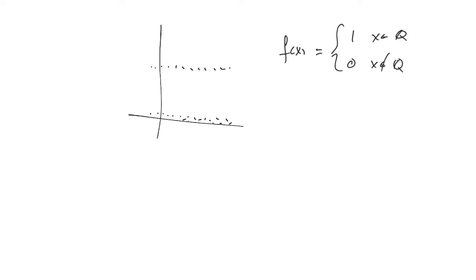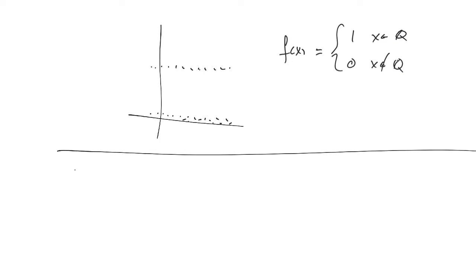That was the first of the two wild examples. And in my opinion, considerably wilder is the second example — this is called Thomae's function. I'm not sure how you're supposed to pronounce this; I should have looked it up but I didn't.